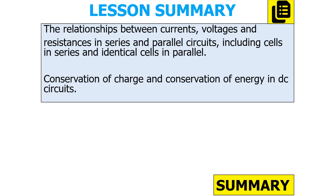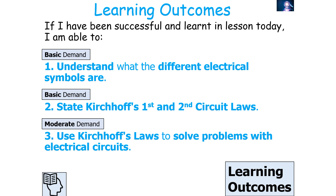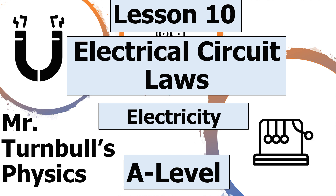To summarize today's lesson: we understand the relationships between current, voltage, and resistance in series and parallel circuits including cells and identical cells in parallel, and we understand the conservation of charge and conservation of energy in DC circuits. If we've been successful, we can state Kirchhoff's first and second circuit laws and use Kirchhoff's laws to solve problems with electrical circuits. Thank you very much for watching this lesson on electrical circuit laws, part of the electricity topic in AQA A-level physics. Have a lovely day.